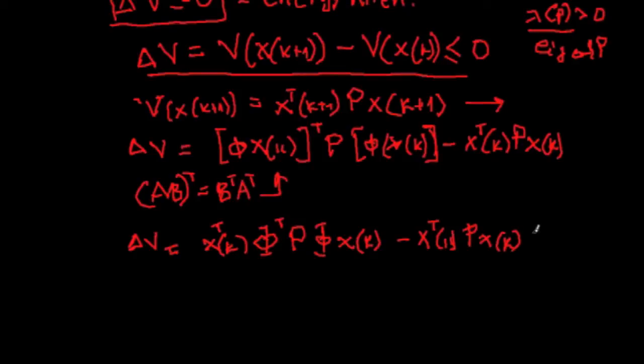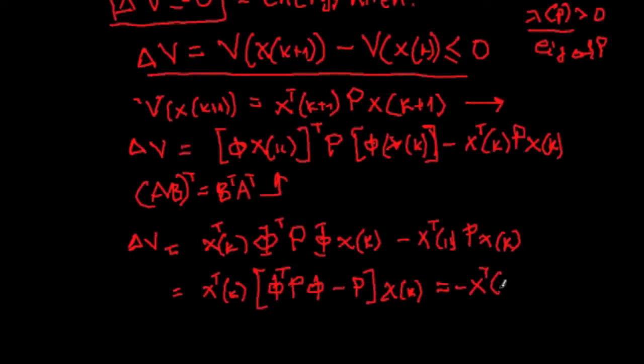And in order this to be less than zero, we specify that this expression can be simplified and grouped as follows: x^T(k) [Φ^T P Φ - P] x(k). And now we write the following expression where this is -Q x(k).